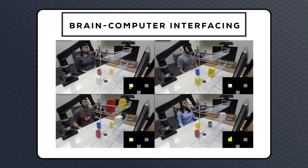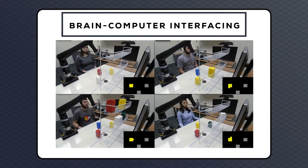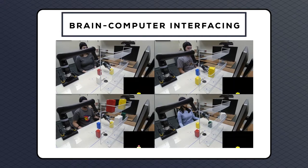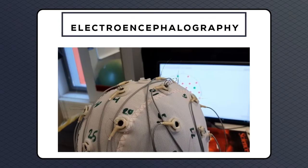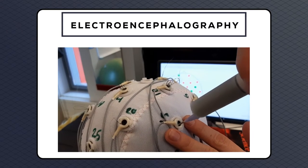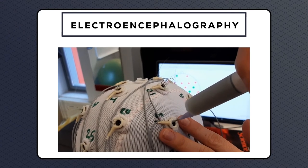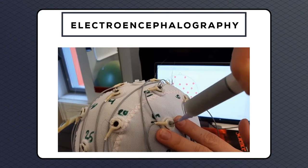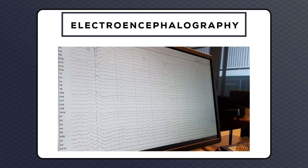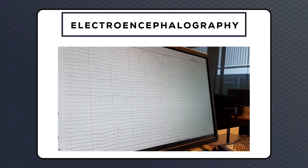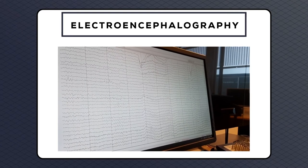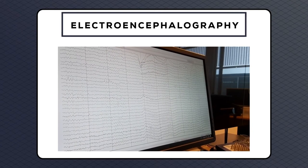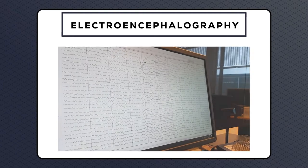Brain-computer interfacing is a paradigm in which the brain activity of an individual is used to control or otherwise influence a digital or mechanical process. There are a variety of brain imaging techniques used in brain-computer interfacing, and EEG is one of the most popular. EEG recordings consist of changes in electrical voltage as measured at the surface of the scalp. These changes in voltage are produced by the synchronized activity of many neurons and thus reflect underlying processes occurring within the brain.